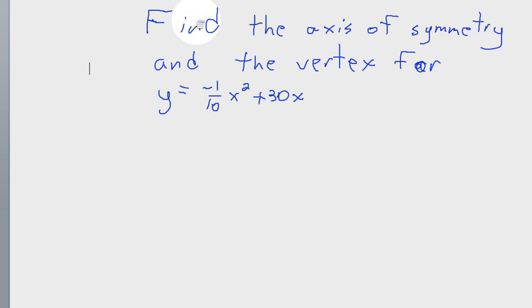So in this example, we are asked to find the axis of symmetry and the vertex for y equals minus one-tenth x squared plus 30x.